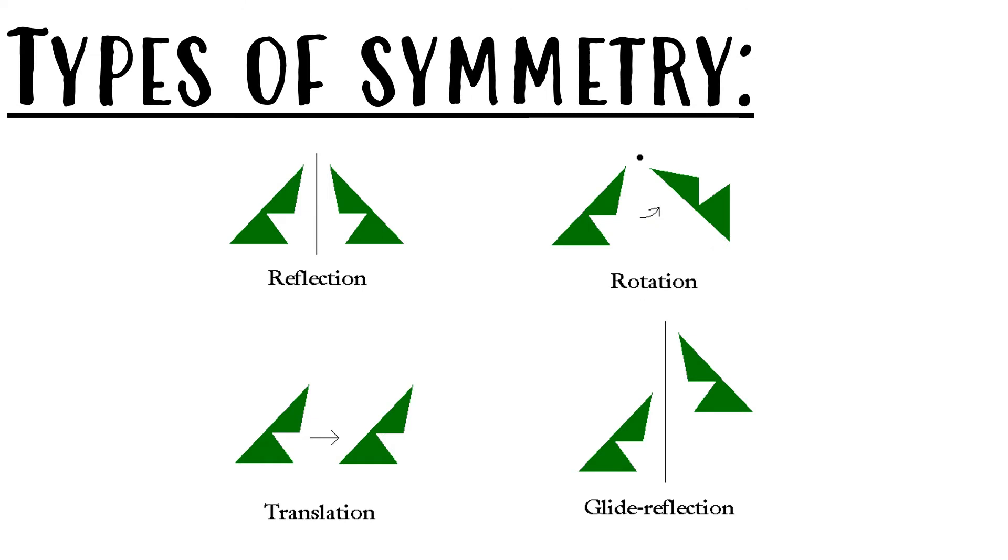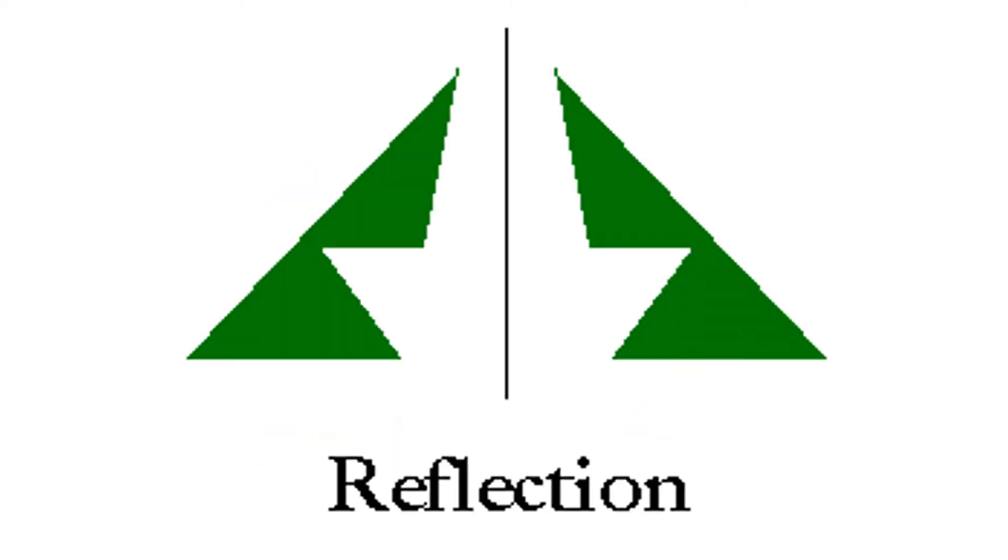Types of symmetry. There are different types of symmetry: reflection, rotation, translation, and glide reflection. Today we will be looking at reflection.